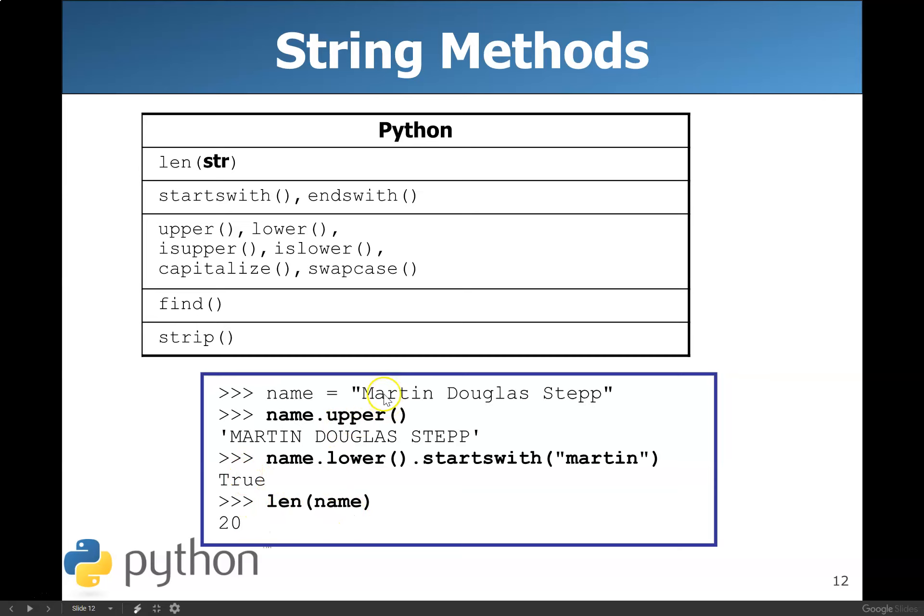And then the length of the name, it counts everything, including spaces. Don't forget spaces. So that's 1, 2, 3, 4, 5, 6, space is 7, then continuing through the string to 20.